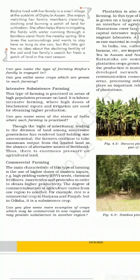Agriculture done to earn money is called commercial farming. The main characteristic of this type of farming is the use of higher doses of modern inputs — all modern techniques are used, including hybrid seeds, chemical fertilizers, insecticides, and pesticides. For example, rice is a commercial crop in North India, especially in Haryana and Punjab, but in Odisha it is used as a subsistence crop. So the meaning of the same crop can change from place to place.